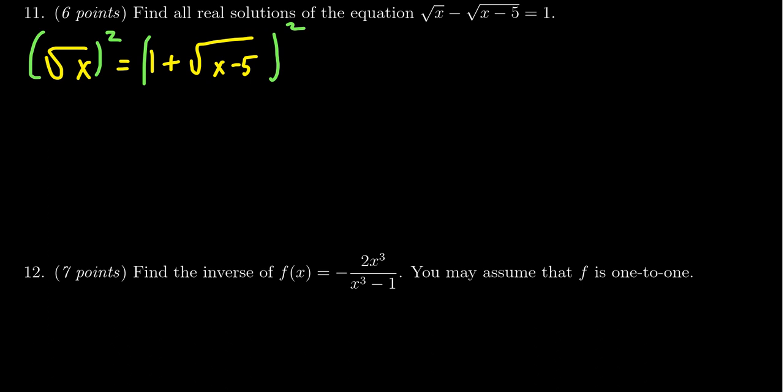On the left-hand side, when you square the square root of x, you'll get an x. On the right-hand side, you do have to foil this thing out, because it's 1 plus the square root times 1 plus the square root. So you get 1 times 1, which is 1. You'll get 1 times the square root, which is the square root of x minus 5. Then you'll get the square root times 1, so it's another square root of x minus 5. And then you'll square the square root, so you end up with an x minus 5. The square root of x minus 5 times square root of x minus 5 is x minus 5.